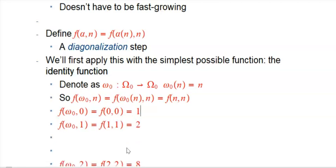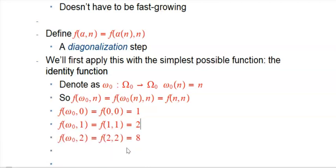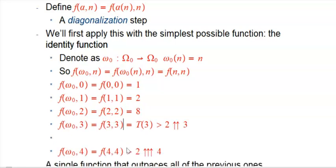So f of omega-naught is one fixed function with all these different inputs. The key is that the input now also tells you which function to look up. With input 0, we use f of 0, which is basic — this just gives you the successor of 0, which is 1. When input is 1, we plug into f1, which is 2. When input is 2, we plug into f2 — f of 2 comma 2 is 8.